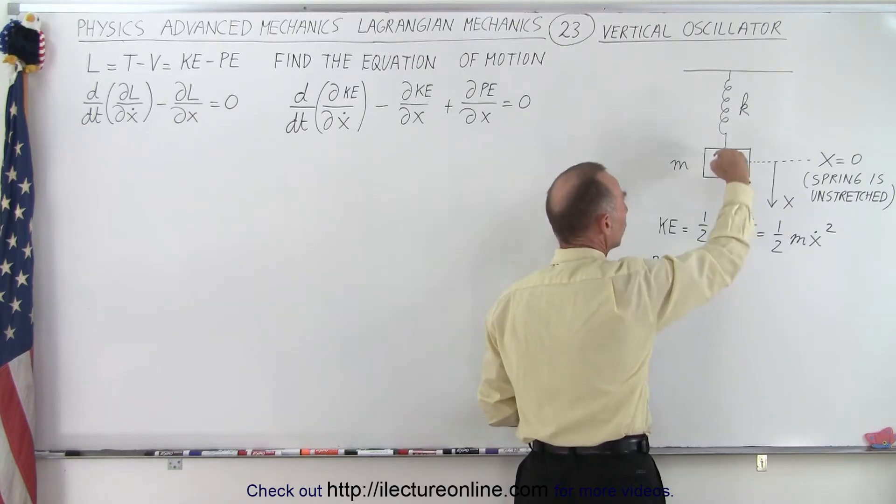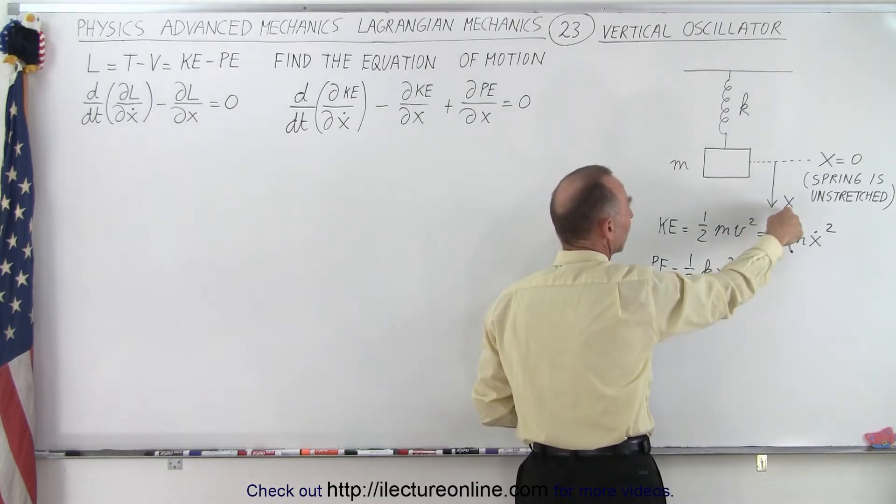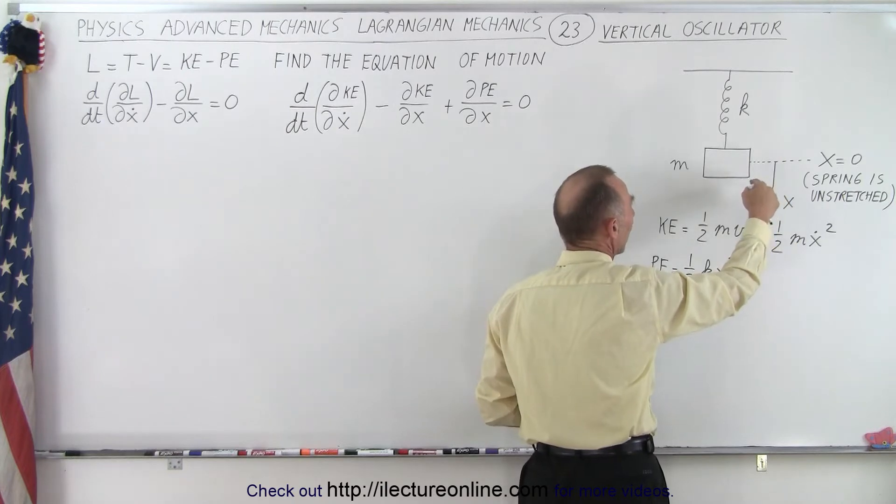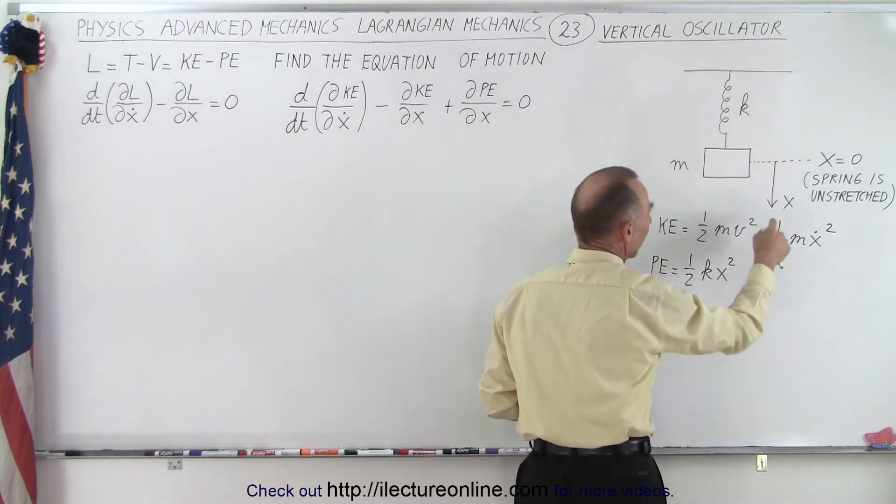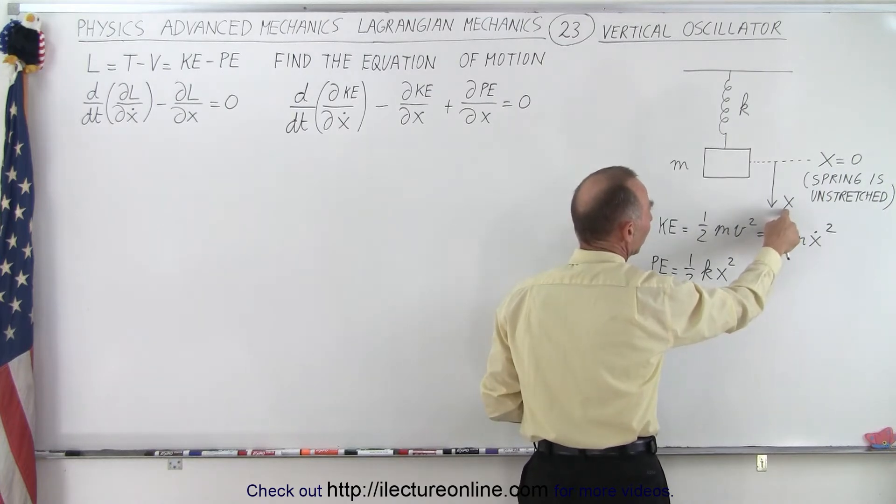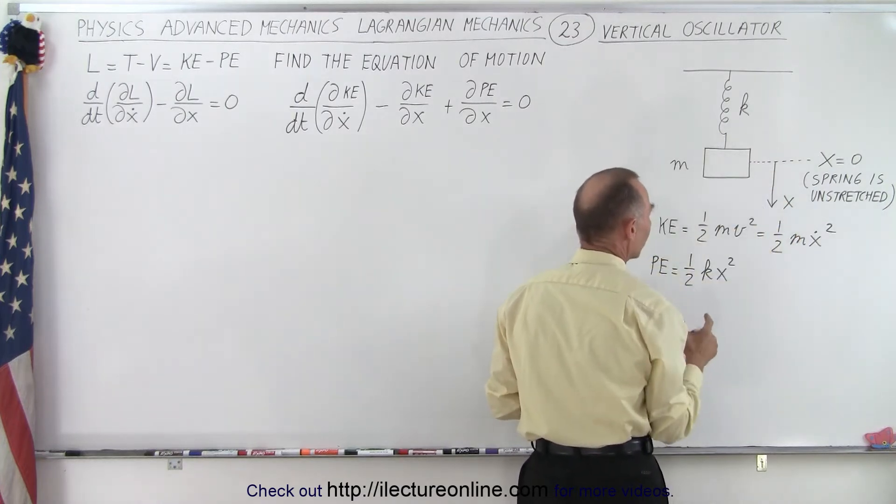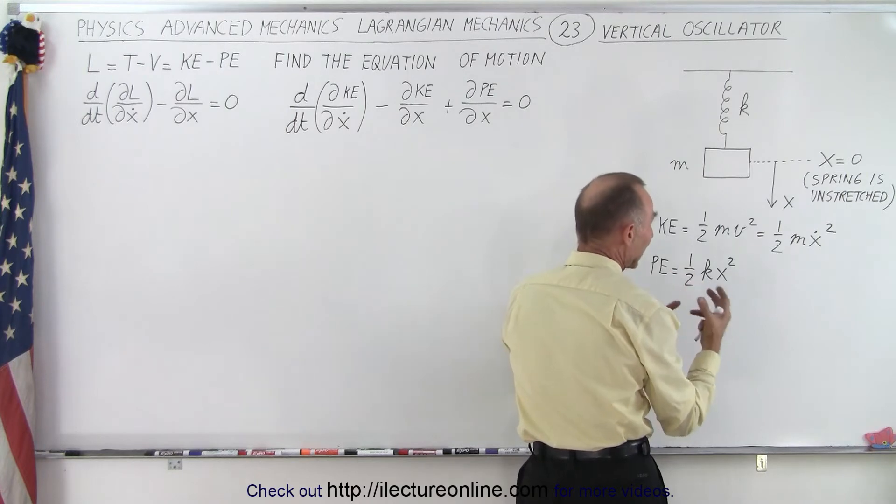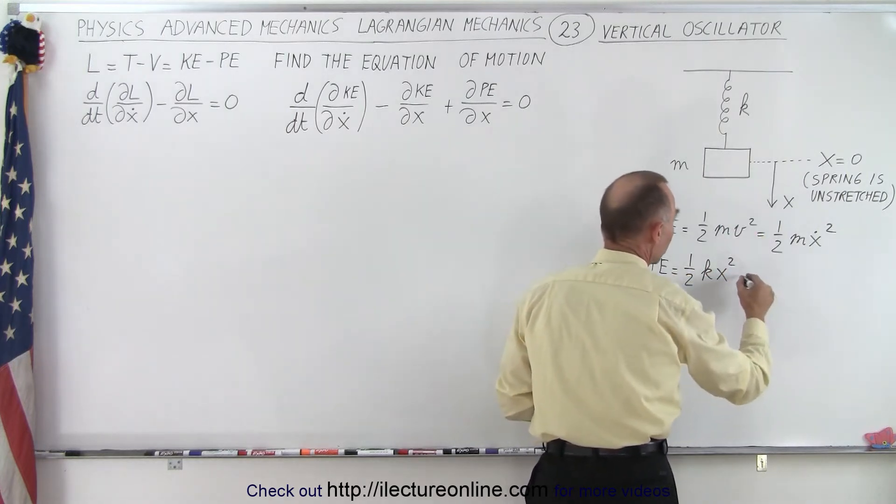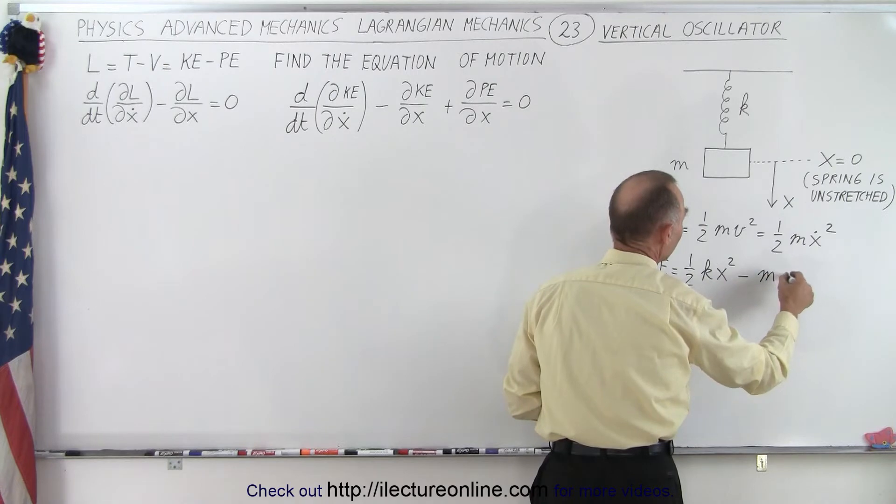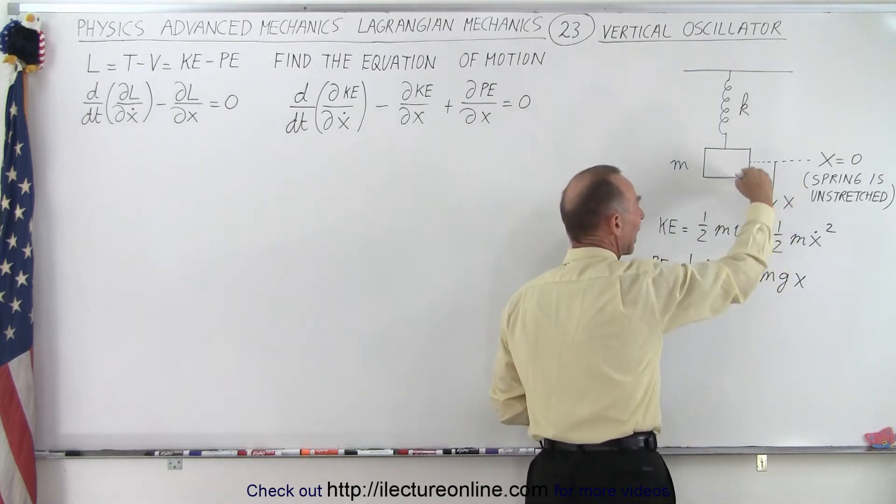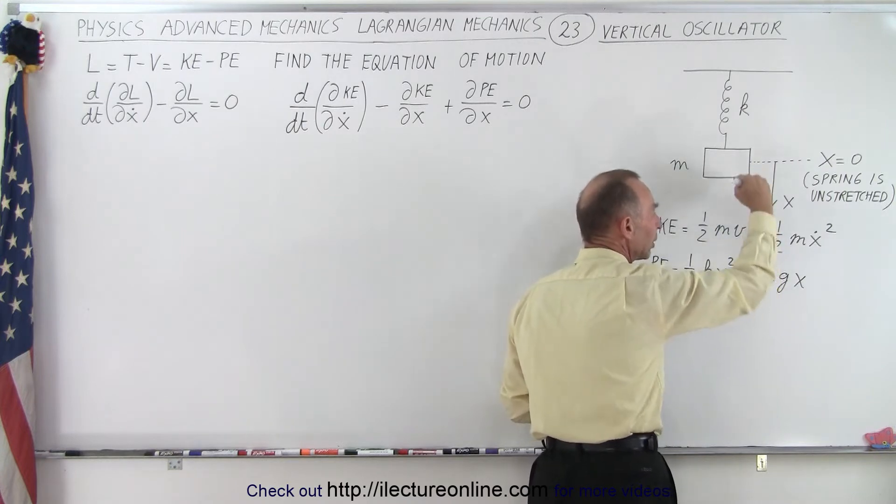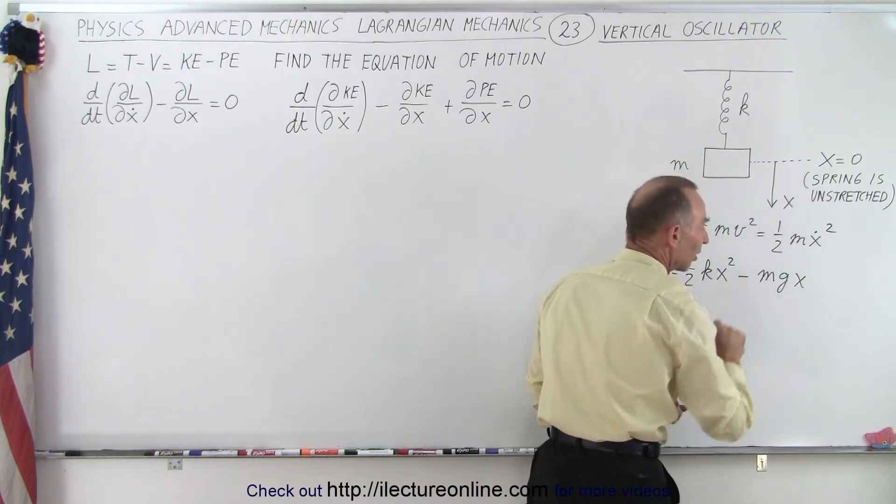But also, we're losing height in this direction. So if we go upward, we're gaining height. If we go downward, we're losing height. But notice we have x positive in the down direction. So the potential energy gained or lost by motion in the vertical direction will be minus mgx. When x increases, we have less potential energy as we go down, so therefore the minus instead of the plus.